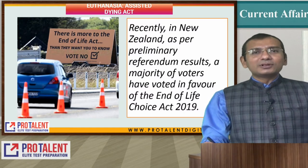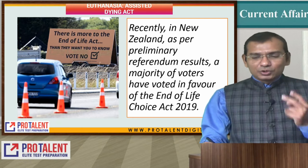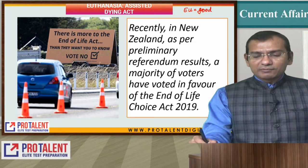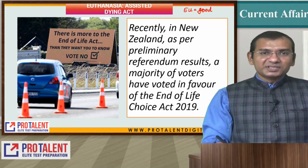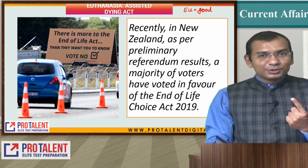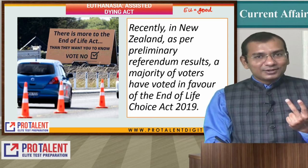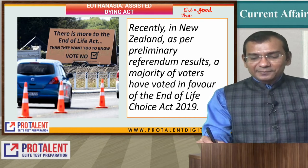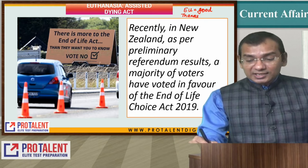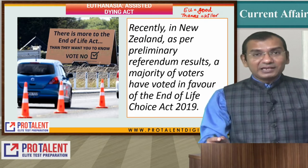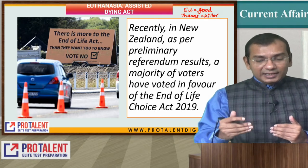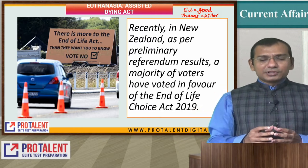Euthanasia has two words. One is 'eu', which means good — whenever you have the prefix 'eu' it means good, as in euphemism or eulogy. The next word is 'thanatos' or 'thenia', which means killing; a person who kills is known as a killer. So 'thenia' is a killing, and a good way of killing is called euthanasia.